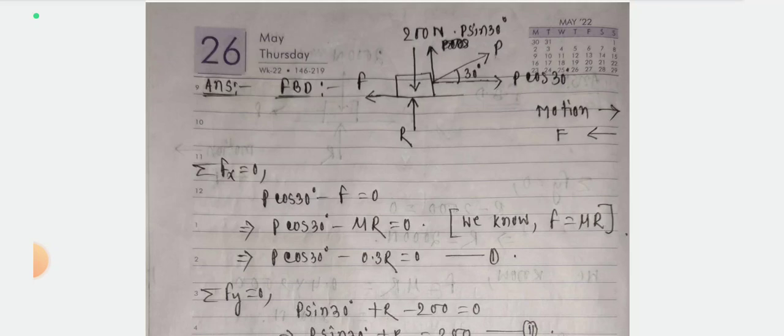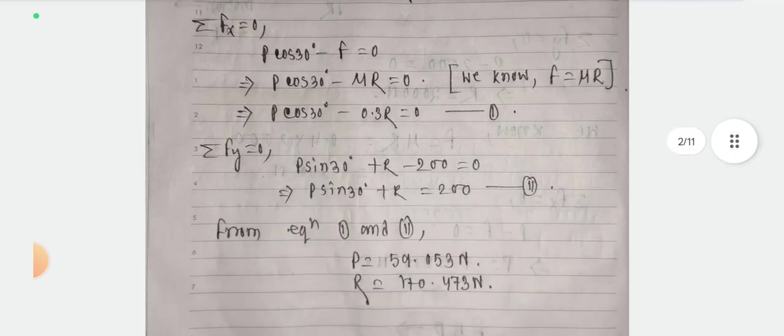F equals mu R, where mu is 0.30. So F equals 0.30 R. Applying summation of Fx equals to 0: P cos 30 degrees minus 0.30 R equals to 0. This is Equation number 1.